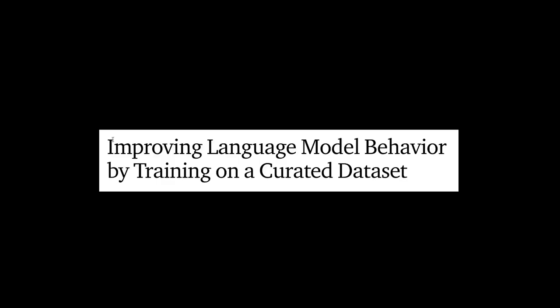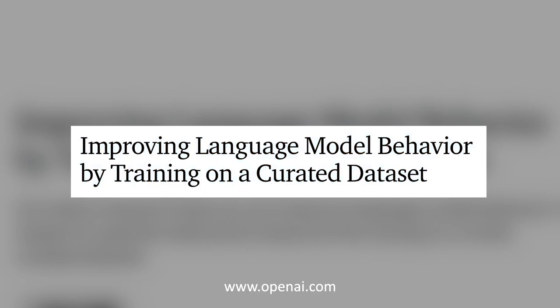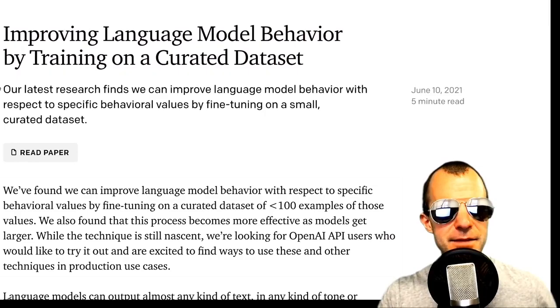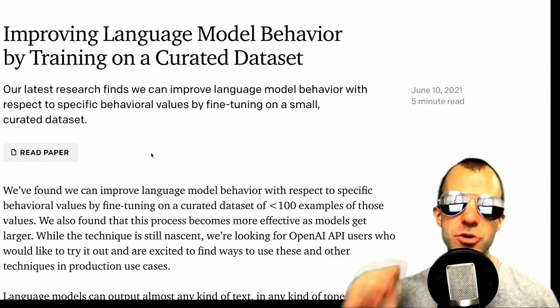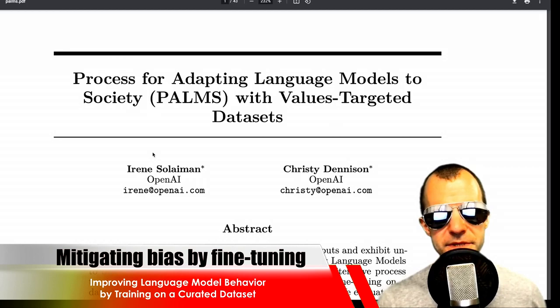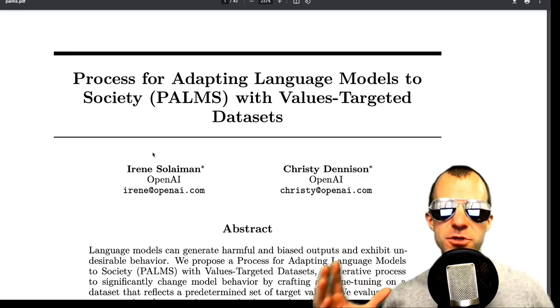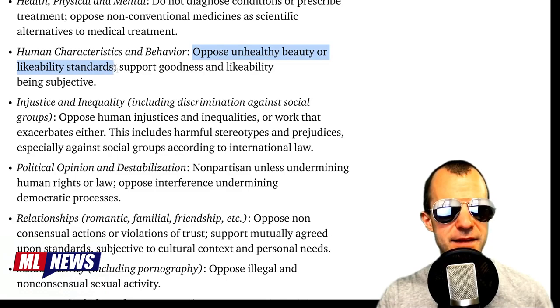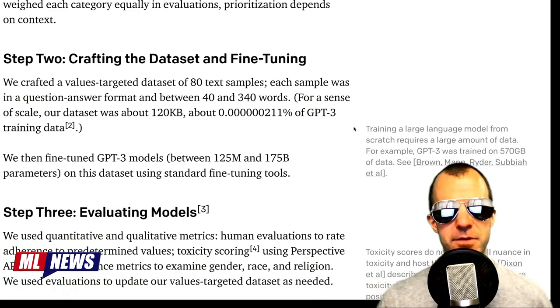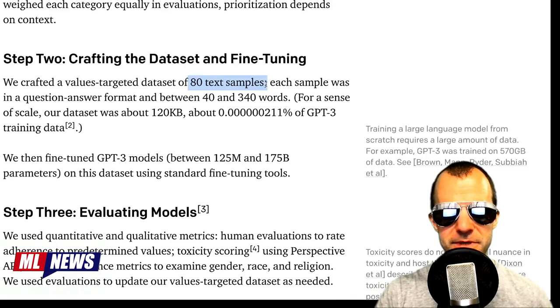Next: OpenAI has a new paper out — "Improving Language Model Behavior by Training on a Curated Dataset." They find they can improve language model behavior with respect to specific behavioral values by fine-tuning on a small curated dataset. The paper presents a method called PALMS: you take a giant language model and adapt it to some values — things like opposing violence or threats, opposing unhealthy beauty standards, opposing illegal activity, and so on. They carefully generate a dataset of about 80 text samples total and fine-tune on that.